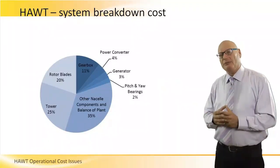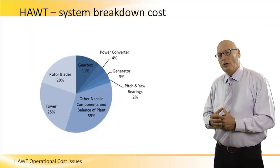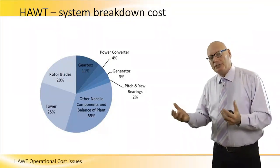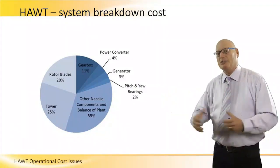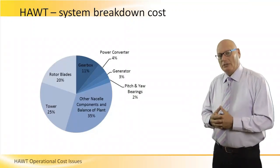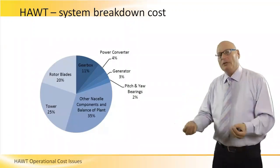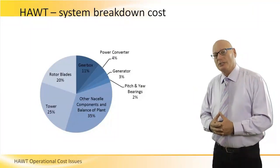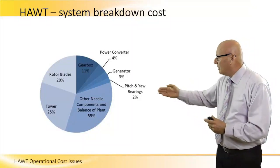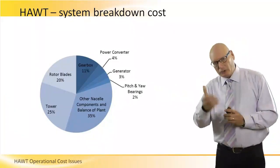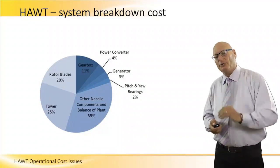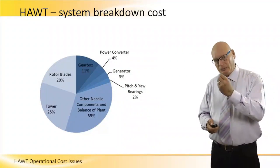The generator itself is 11% of breakdown cost. In large HAWT farms the generator is a huge machine, and when it breaks down it's very costly to repair. The power converter is only 4%. Pitch and yaw bearings and control is 2% — minor. Rotor, tower, and nacelle components are the majority of the breakdown cost.